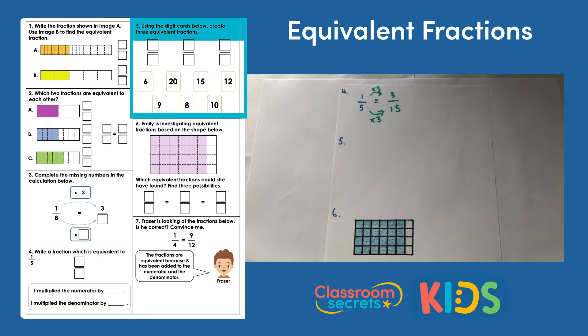Question 5. Using the digit cards below, create 3 equivalent fractions. This is a really tricky one. There might be some trial and error involved in this. I can already spot there are quite a few multiples of 3. I've got 6, 9, 15 and 12. They're all multiples of 3. So I'm thinking that maybe some of those could be used as my denominators because I know how to work between multiplying and dividing by 3 to check if they're actually equivalent.